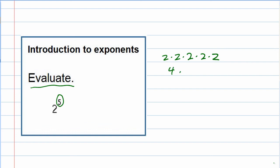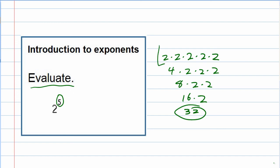2 times 2 is 4. Then multiplying just 2 at a time again — 4 times 2 is 8. Bringing down the other factors: 8 times 2 is 16. And then 16 times 2 is 32. So the first thing we did was expand the exponent, and once we have it expanded, we can just multiply it all out. And we have our solution: 32.